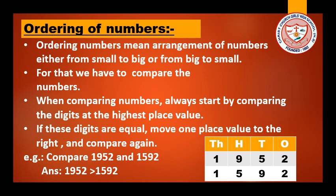But before arranging the numbers, we have to compare them. When comparing numbers, always start by comparing the digits at the highest place value. So you can see here we have taken the example of 1952 and 1592. So if we are going to compare these numbers, first of all we need to compare the digits at the highest place value. I have placed these two numbers in the place value chart.